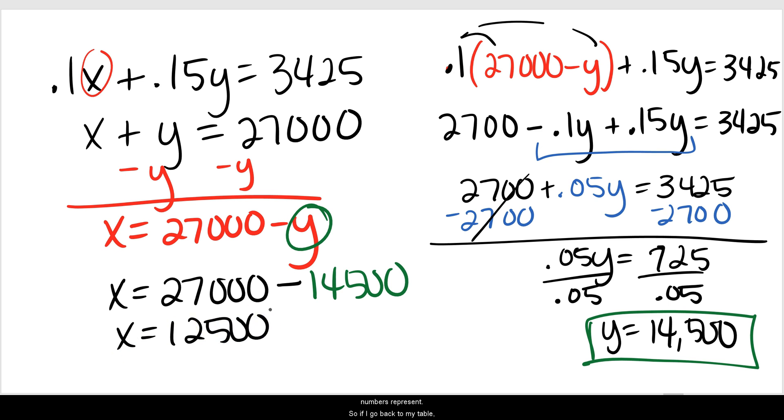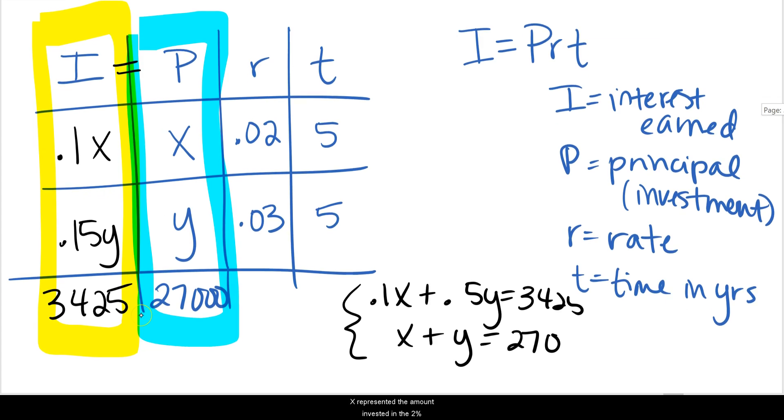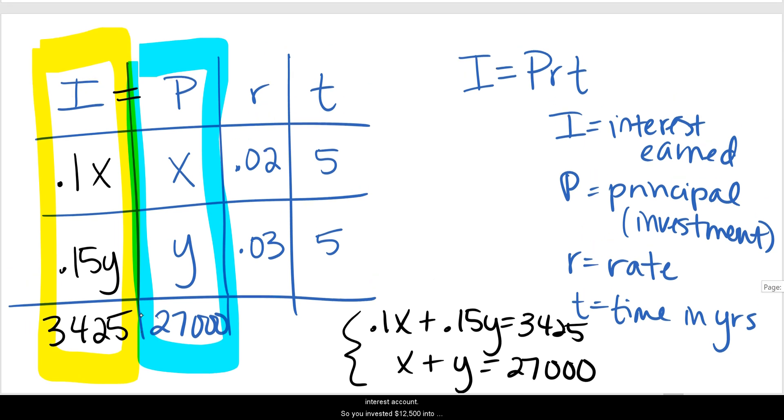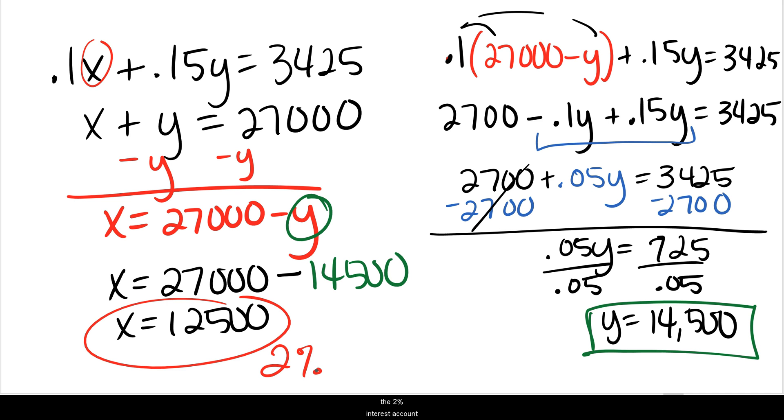So I've got two numbers, but I have to remember what these numbers represent. If I go back to my table, X represented the amount invested in the 2% interest account. So you invested $12,500 into the 2% interest account. And in the 3% interest account, you invested $14,500. And the two of them added together gives you that total investment of $27,000.